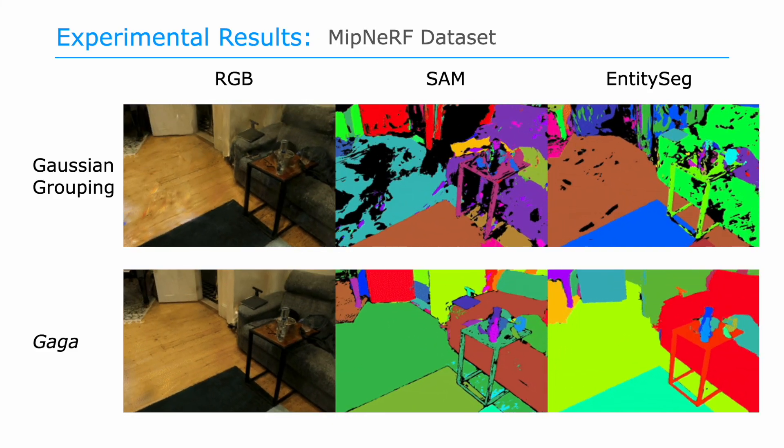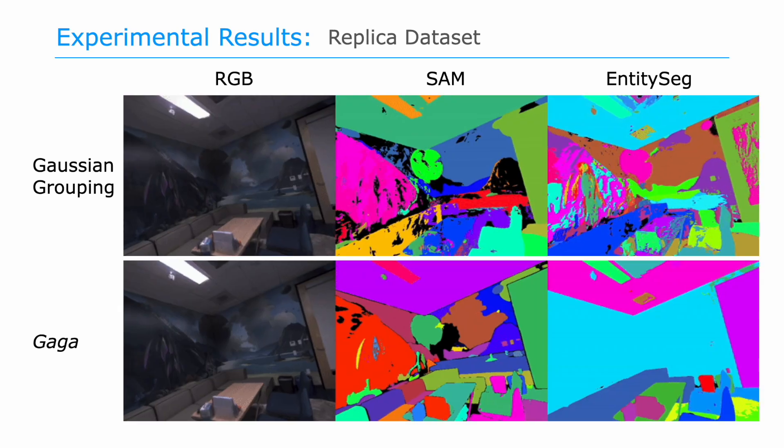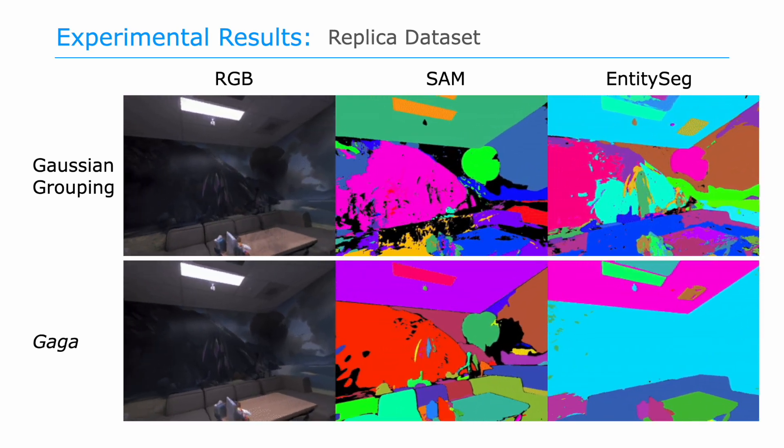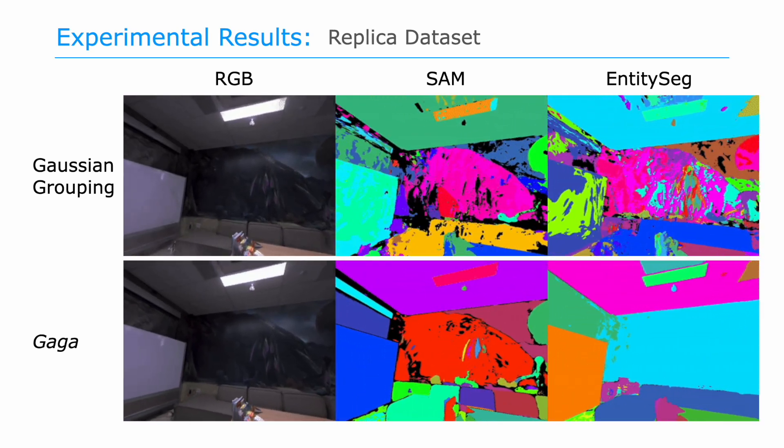Compared with previous results, Gaga provides segmentation with superior segmentation accuracy, multi-view consistency, and reduced artifacts.